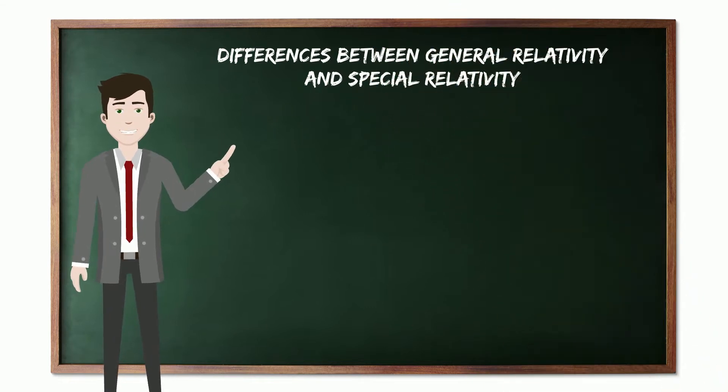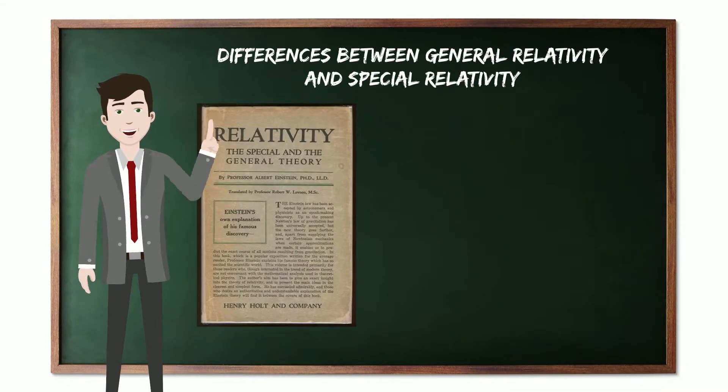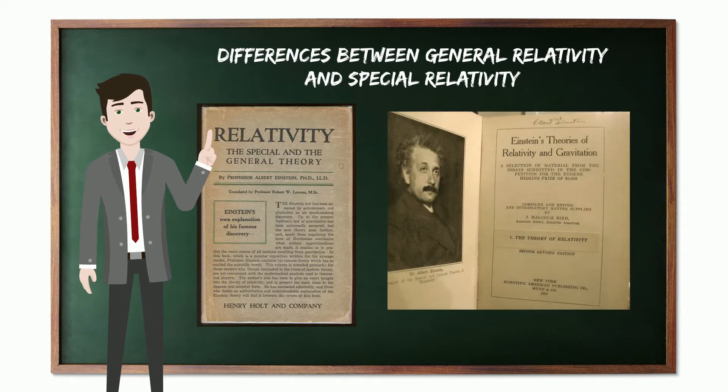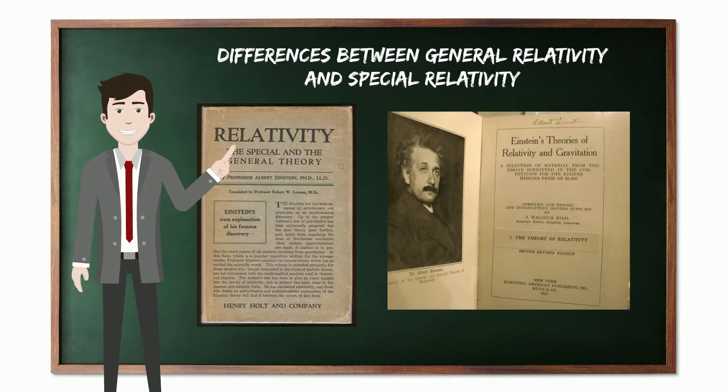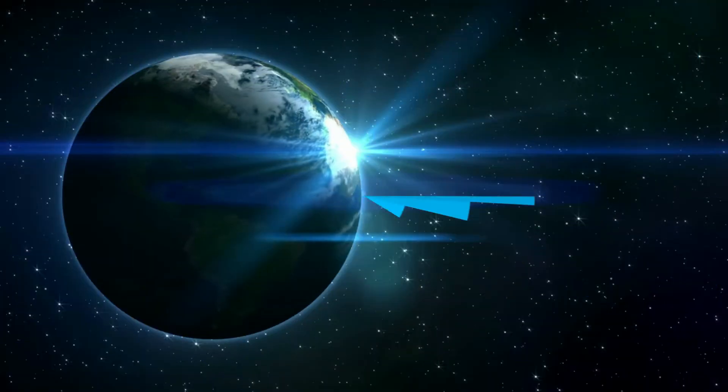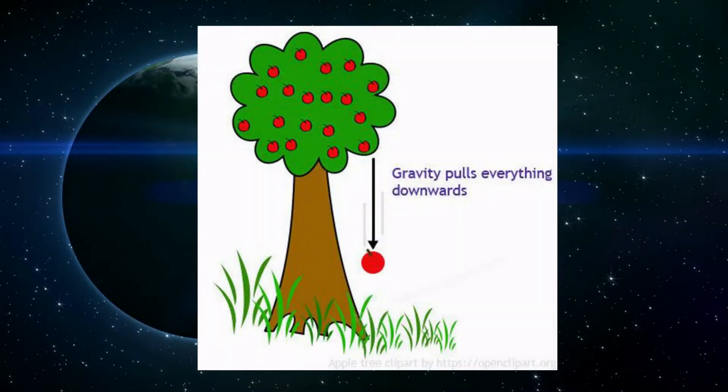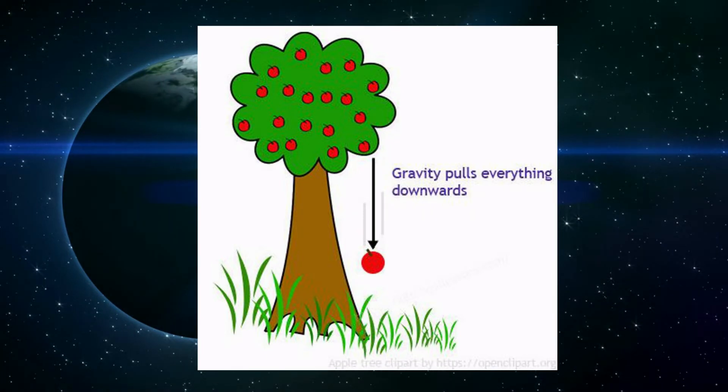General relativity was published in the year of 1915, whereas special relativity was published in 1905. General relativity considers and includes gravity, but special relativity does not include gravity as no forces are acting on it.